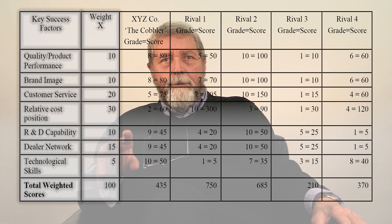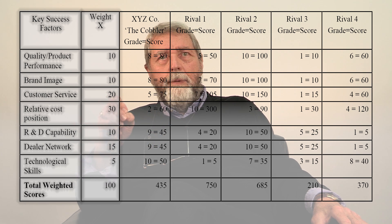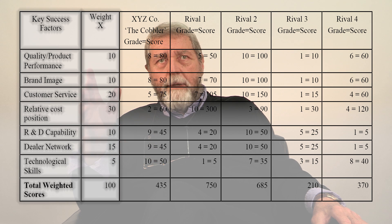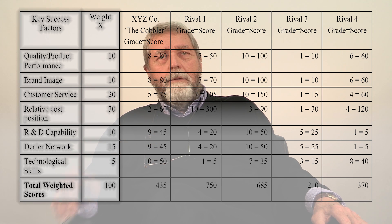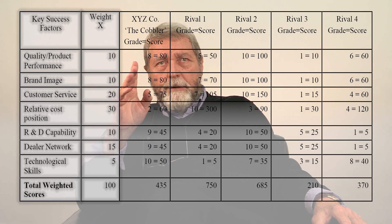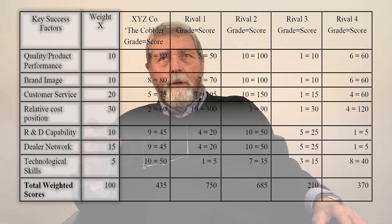A caveat: the result of this model will be of little value if each of the key success factors are weighted equally. For example, if you have five key success factors each with a 20% point value, the value of the model will be diminished. Similarly, if one key success factor has a significantly higher weight of say 70 points out of 100, the result will also be of little value — you might as well just measure that particular attribute.